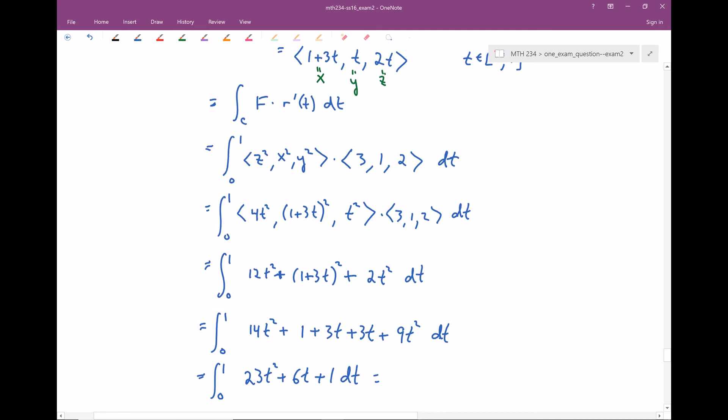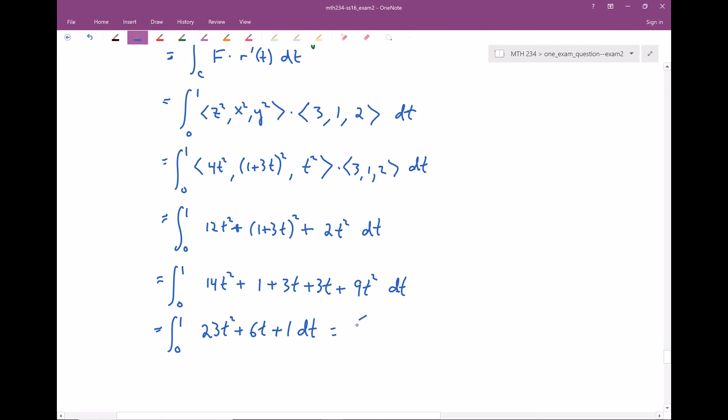Now we're finally ready to integrate. So let's see, 23 divided by three. I don't think that's anything nice. Let's see, six divided by two. That'll be three T squared. And I integrate one, I get T. And again, I'm going from zero to one.